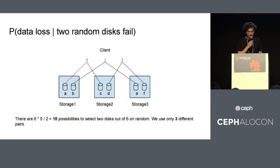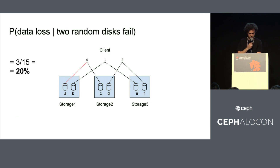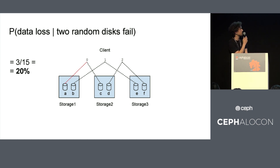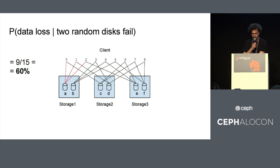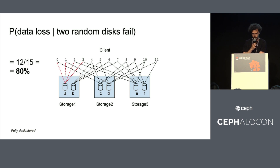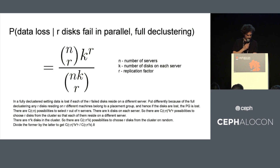If you look at this example cluster, we have six disks. There are exactly 15 possibilities to select two disks out of six. But in this setup, we only use three placement groups. So if two random disks fail, we lose customer data with a probability of 20% in that particular cluster. If you had six groups, it would be 40%; nine groups, 60%; and 12 groups — the full declustering setting — it would be 80%. In general, it looks like this, which is pretty obvious, so I won't spend more time on it.